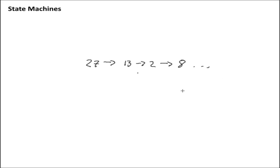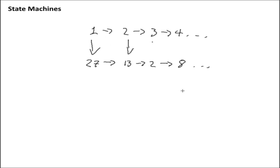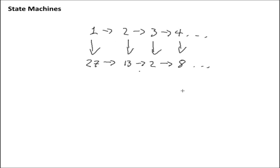However, even if the sequence doesn't have a pattern, we can still create it using a sequential counter simply by creating our counter circuit — one, then two, then three, then four — and then just using a lookup table to map these values to each other. So even if the sequence doesn't have any discernible pattern, we can still make it very simply using a counter register and a lookup table.